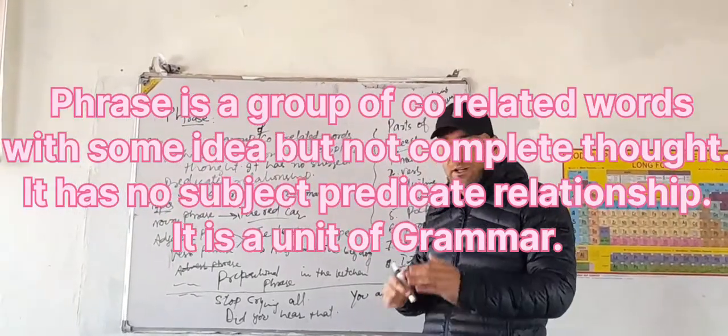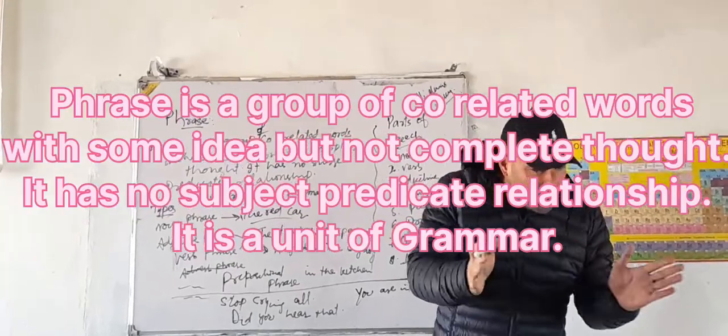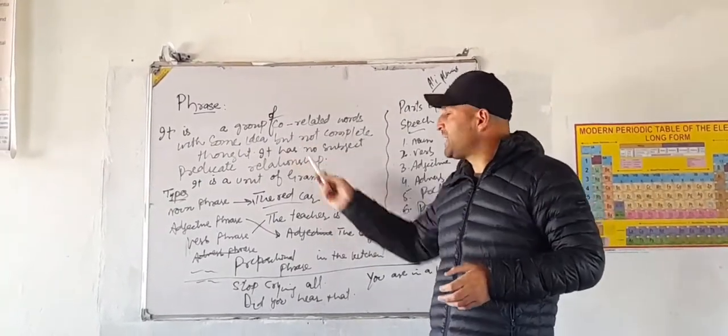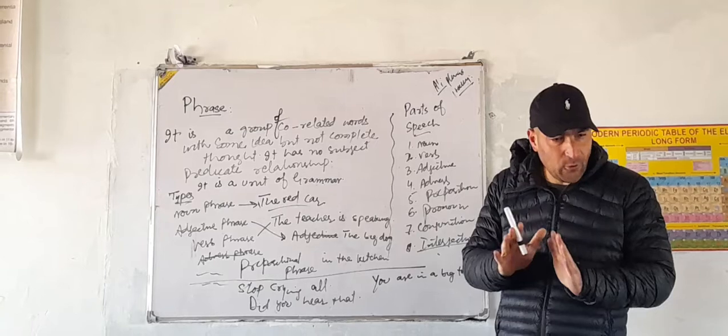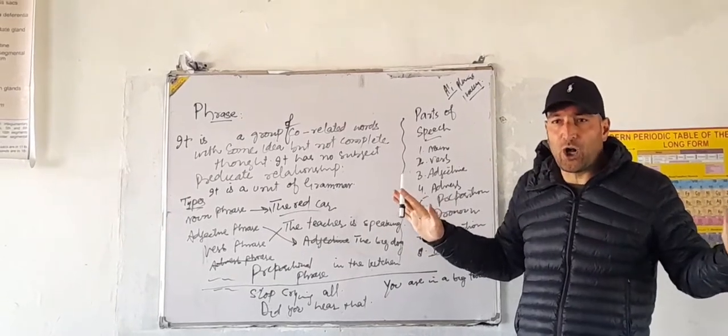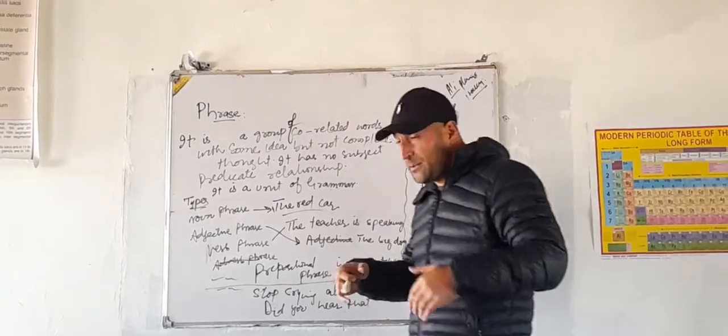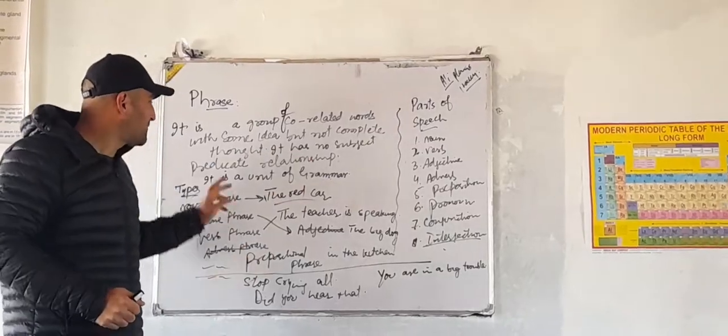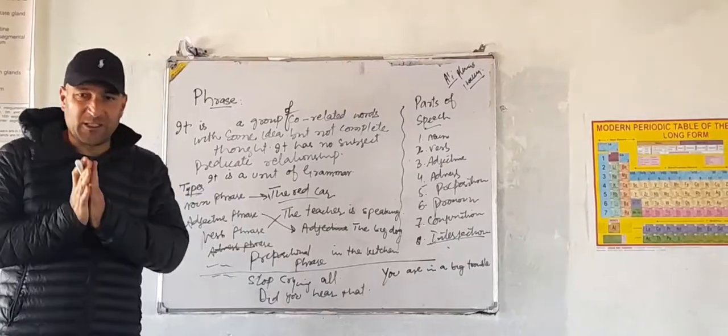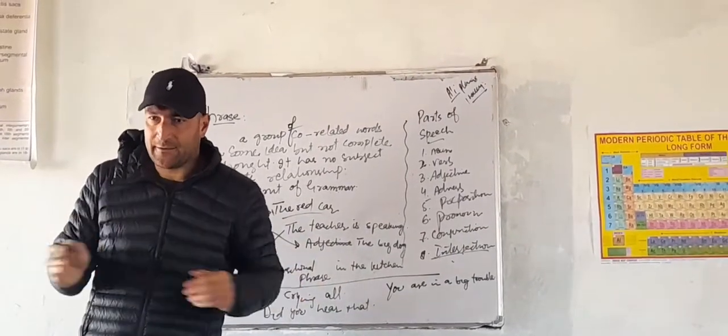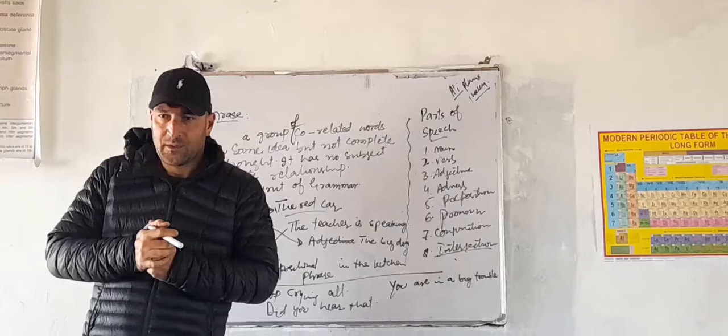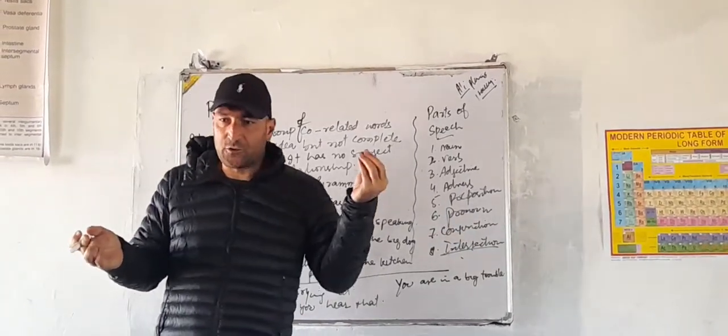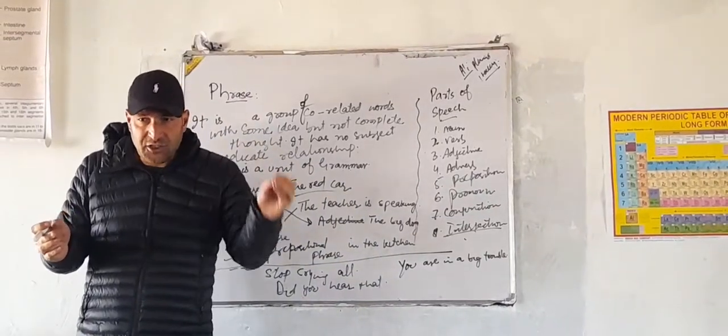It's a group of correlated words. A sentence is a group of words with complete thought. It has a subject predicate relationship. This is subject predicate relationship. It has a subject verb relationship.